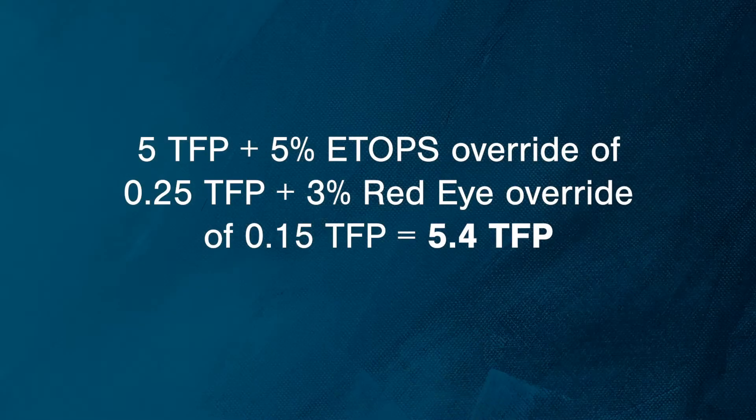Remember that overrides can stack on top of each other. So for example, if the same ETOPS flight happened to operate as a red-eye at any time between 0100 to 0400 domicile time, then an additional 3% override is applied to the straight pay value of 5 TFP and will result in the flight paying a total of 5.4 TFP.